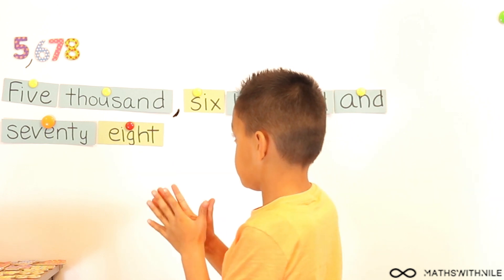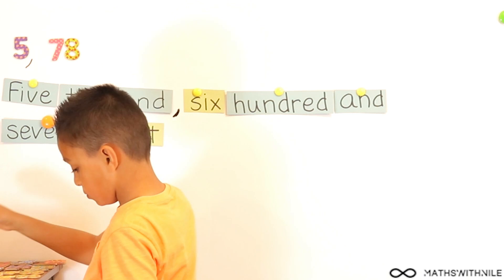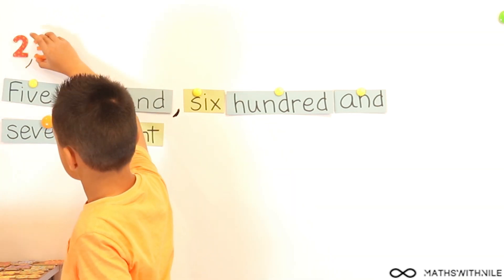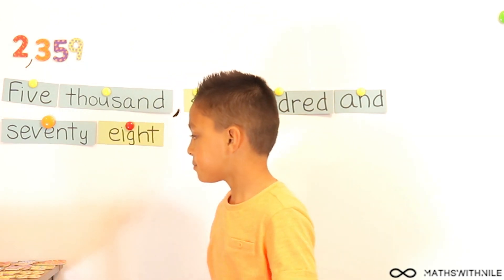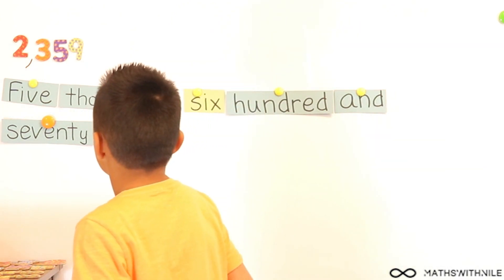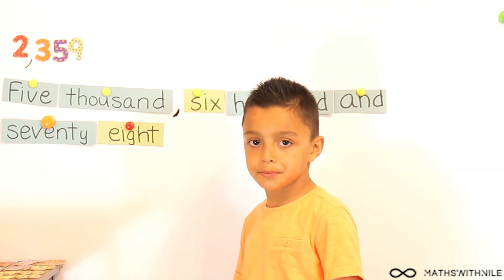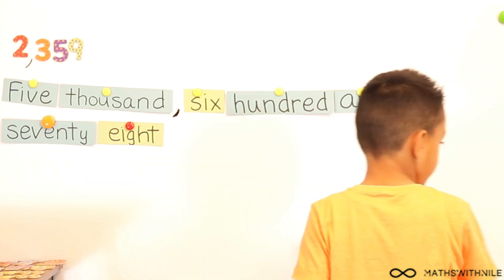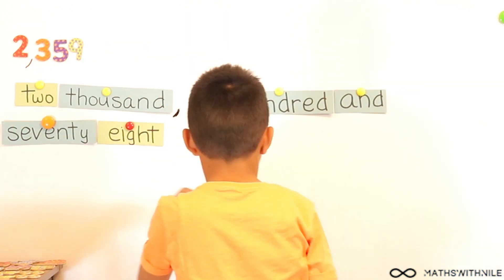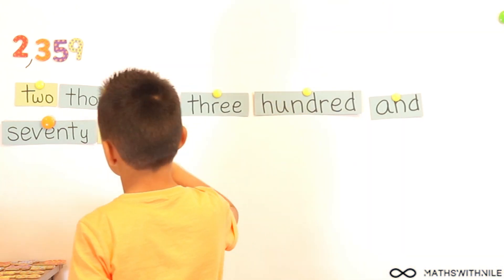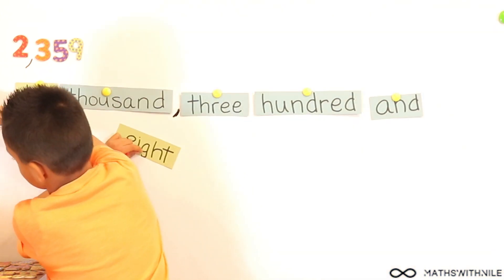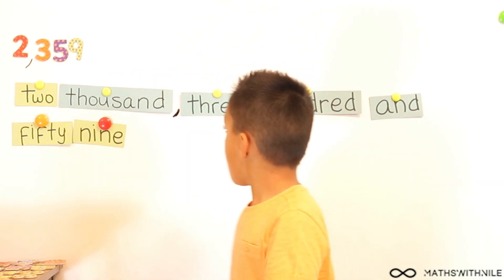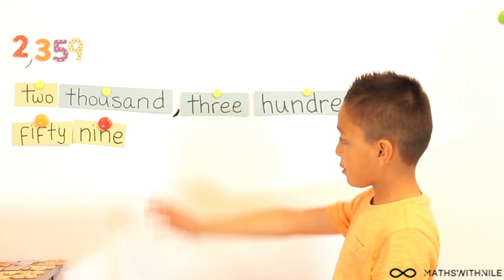Change the numbers to 2, 3, 5, 9. And what number is that? 2,359. So let's see what you would change in the worded one underneath. We've done 2,359.